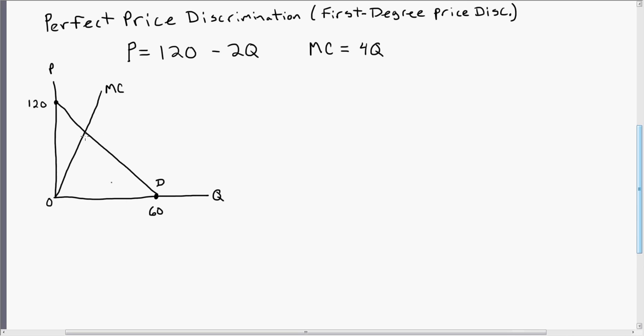One thing we're going to need to solve for in order to get producer surplus is this intercept right here. Where does the demand curve intersect marginal cost, or where does price intersect marginal cost? So to find this value, you just set price equal to marginal cost.